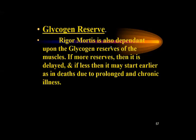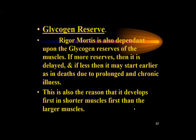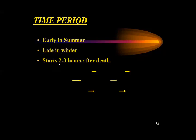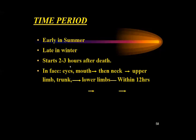Regarding glycogen reserves: rigor mortis onset is delayed if there are more reserves, and earlier if reserves are less — as in deaths due to prolonged or chronic illness. This is also why rigor develops first in shorter muscles than larger muscles, as shorter muscles have lower glycogen. Rigor mortis starts 2–3 hours after death, beginning in the face first — eyes, mouth — then progresses to the neck muscles, then upper limb and trunk, and then lower limb within 12 hours, at which point it is fully established. It stays for 12 hours and passes off in 12 hours.